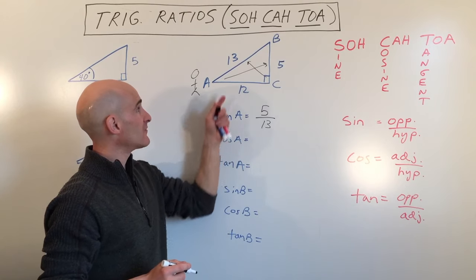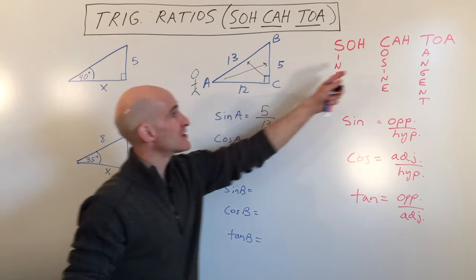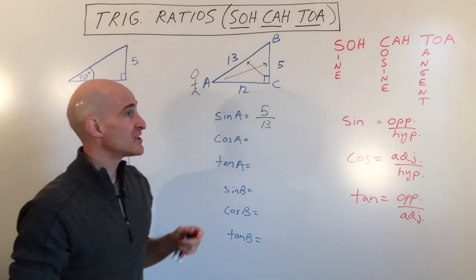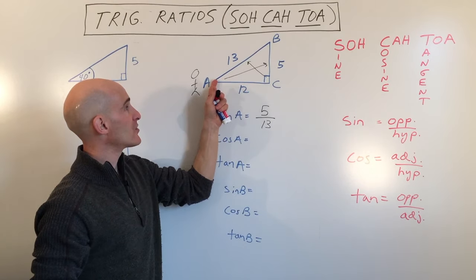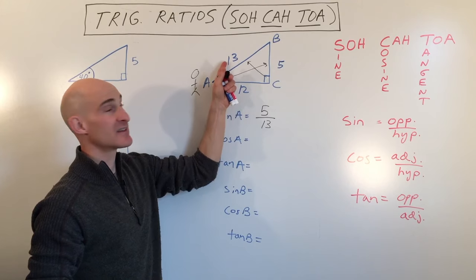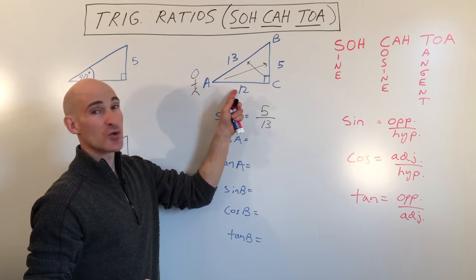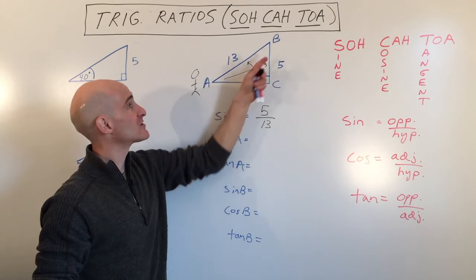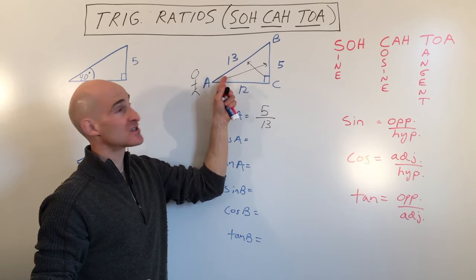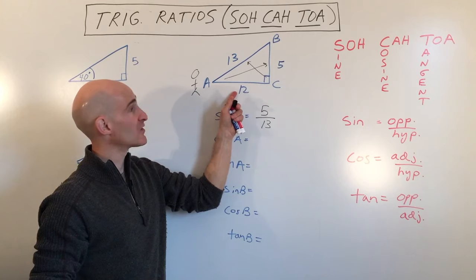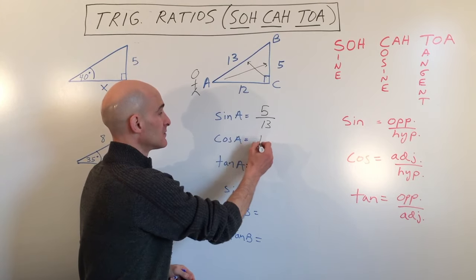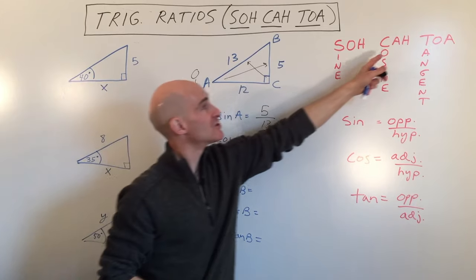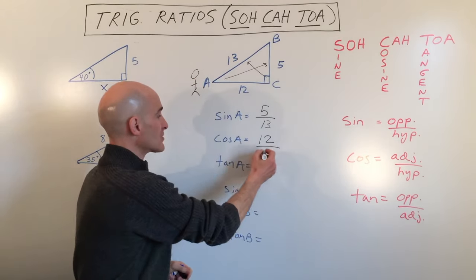For the cosine of angle A, we use the adjacent side over the hypotenuse. Adjacent means next to — but don't pick the hypotenuse (which is 13, the longest side across from the right angle). Pick the other adjacent side, which is 12. So cosine of angle A is 12 over 13.